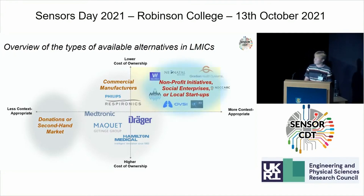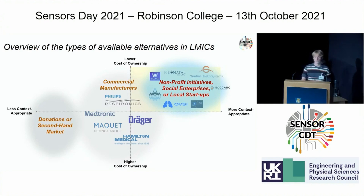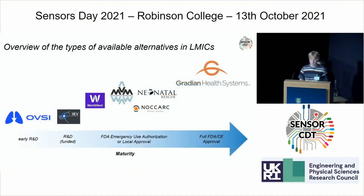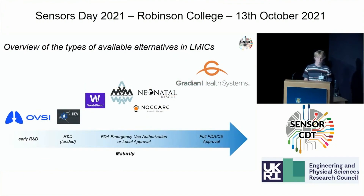The exciting up-and-coming developments, mainly kick-started by the COVID-19 pandemic, are non-profit initiatives, social enterprises, and local startups actively trying to design context-appropriate devices. There's a complete range of maturity in these designs — Gradient Health Systems are at the top at the moment, doing really well, while OBSI is still in its very early R&D stage.